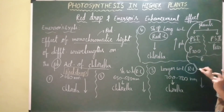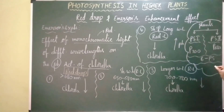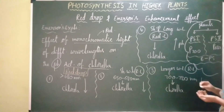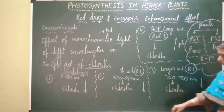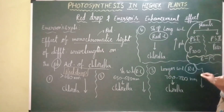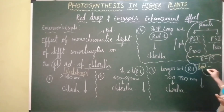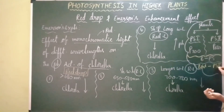Only one photosystem is present in bacteria. However, cyanobacteria, also called blue-green algae, consists of two photosystems again — that is photosystem one and photosystem two.